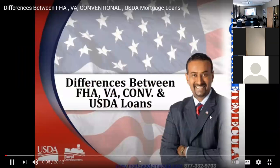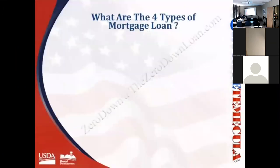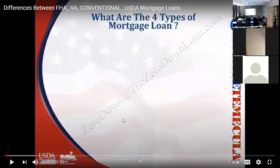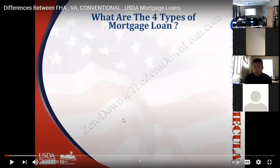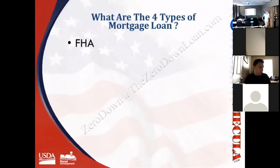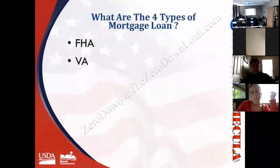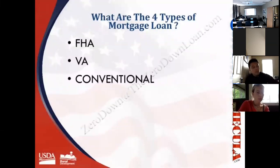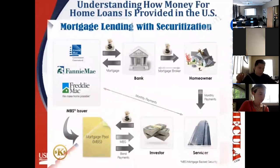Welcome to the homebuyer webinar. Today we're talking about the differences between FHA, VA, conventional, and USDA types of financing. FHA stands for the Federal Housing Administration and it's been around since 1934. VA is overseen by the U.S. Department of Veterans Affairs. Conventional is overseen by Fannie Mae and Freddie Mac. And USDA is overseen by the U.S. Department of Agriculture.